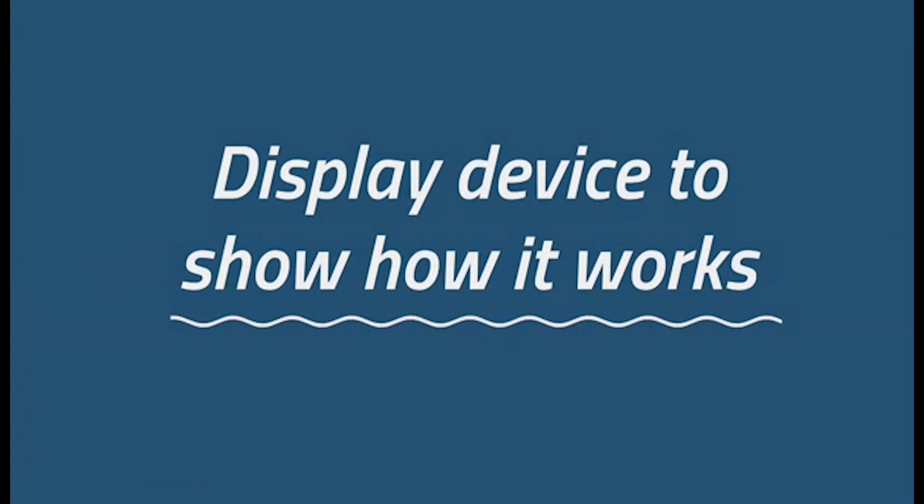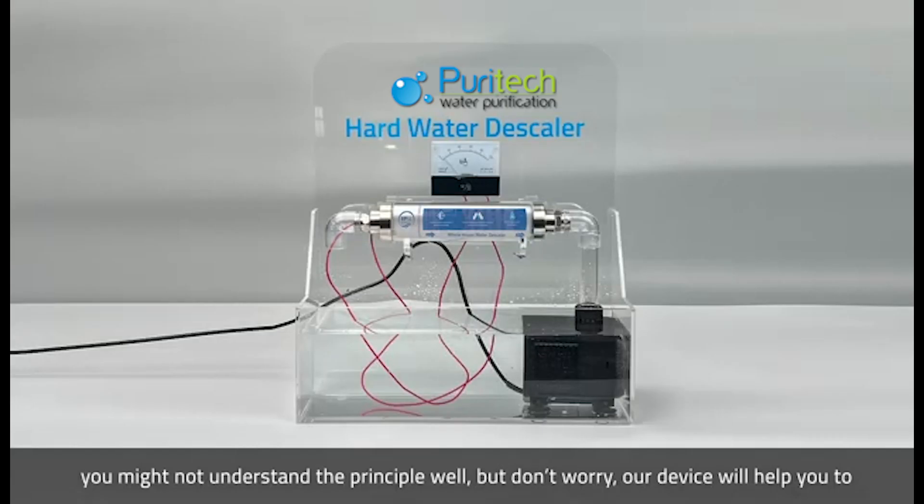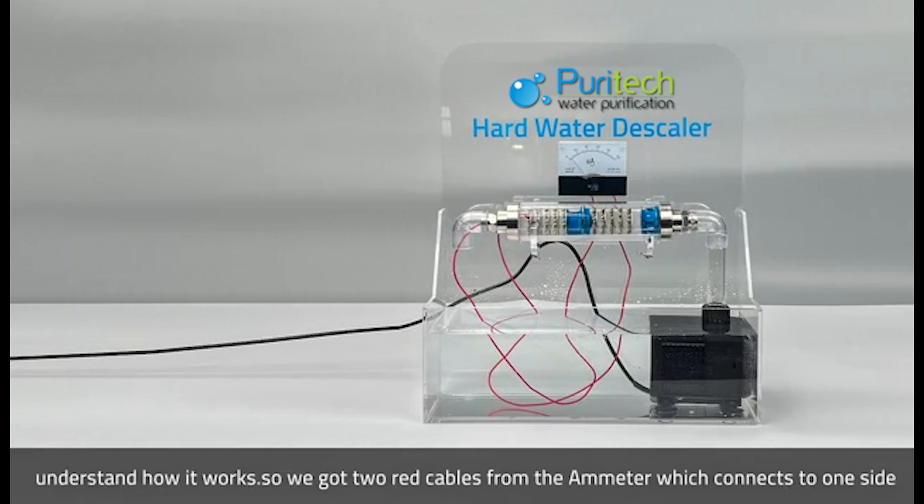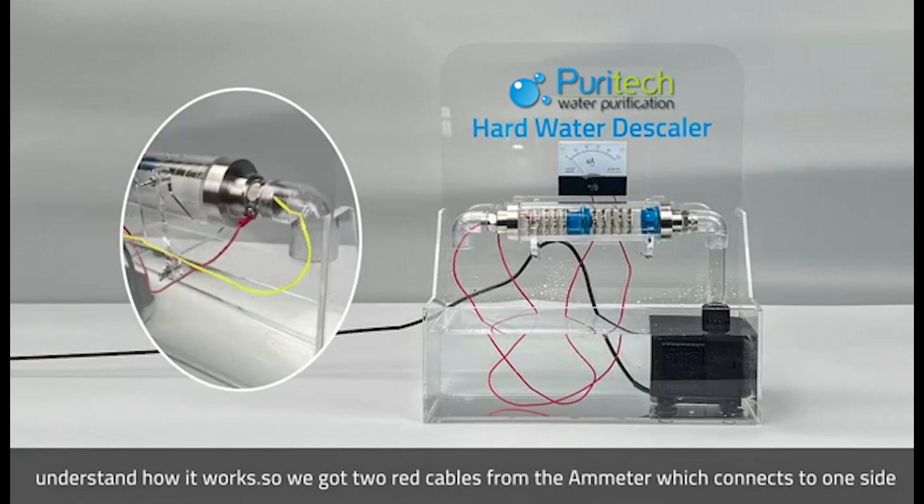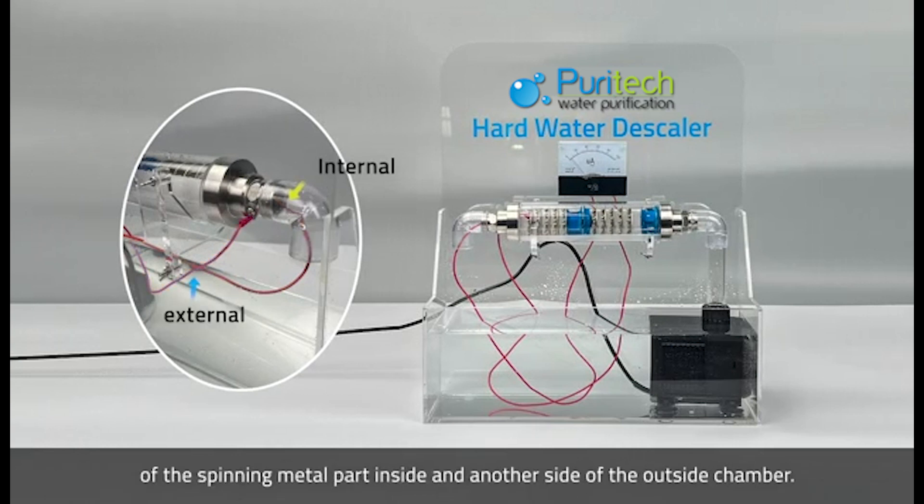We have a display device to show how it works. You may not understand the principle well, but don't worry, our device will help you understand. We got two red cables from the ammeter which connects to one side of the spinning metal part inside and another side of the outside chamber.